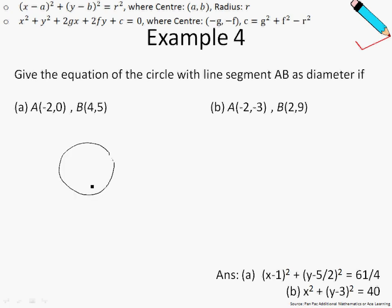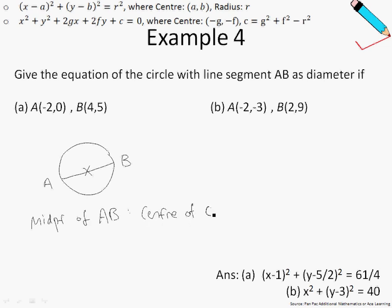Suppose we have a circle with line segment AB. You realize that the midpoint of AB is the center of the circle. You also realize that half of the distance AB is the radius of the circle — half times the distance AB will give you the radius. We will make use of these two pieces of information to help us get the equation of the circle.